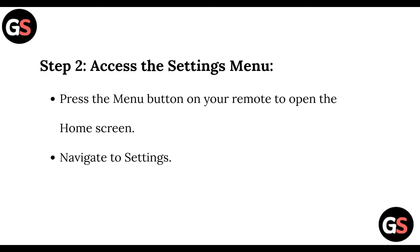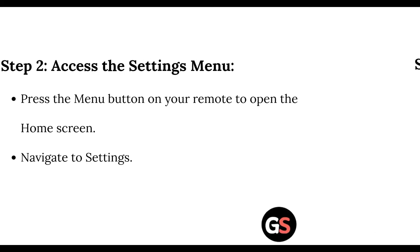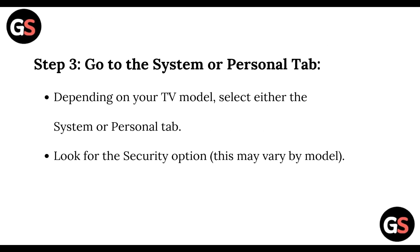Step 3: Go to the System or Personal tab, depending on your TV model. Select either the System or Personal tab and look for the Security option. Note that this may vary by model.